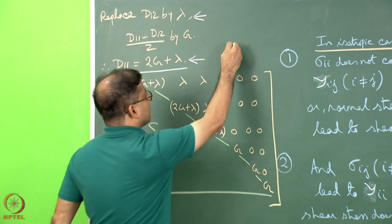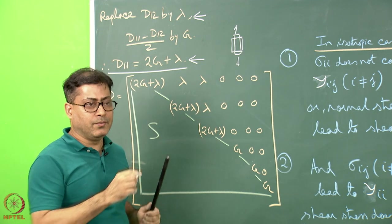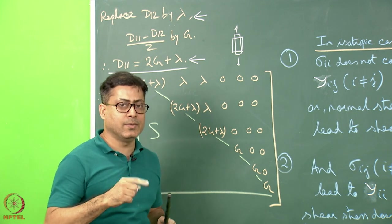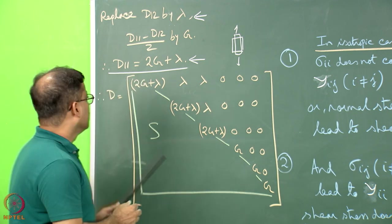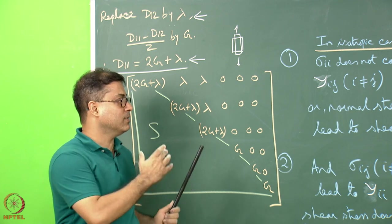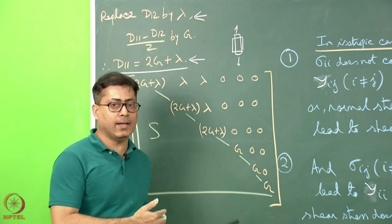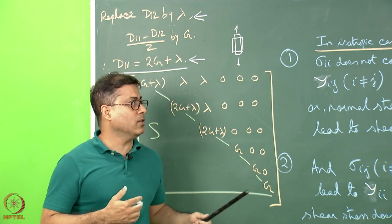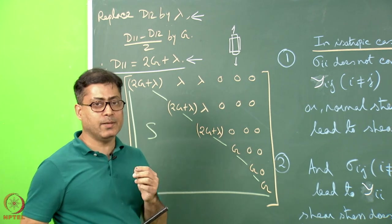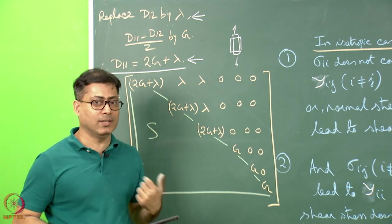This brings us full circle: we started with an isotropic material, expanded into anisotropic material and orthotropy, then considered the special isotropic case with specific D_ij parameters, and arrived back at the known isotropic expression. We have progressed from isotropic → anisotropic → orthotropic → isotropic special case.